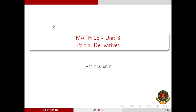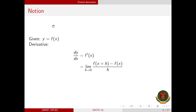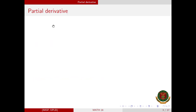Let us continue with Unit of Math 28: Partial Derivatives. If we are given a function in one variable, say y equals f of x, recall that the derivative of y with respect to x, denoted by f prime of x, is the limit of f(x+h) minus f(x) all over h as h approaches 0. So the derivative of y with respect to x is the change in y with respect to a change in x.